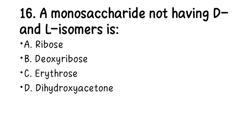Number 16. A monosaccharide NOT having D and L isomers is: A. Ribose, B. Deoxyribose, C. Erythrose, D. Dihydroxyacetone. The right answer is D, dihydroxyacetone.